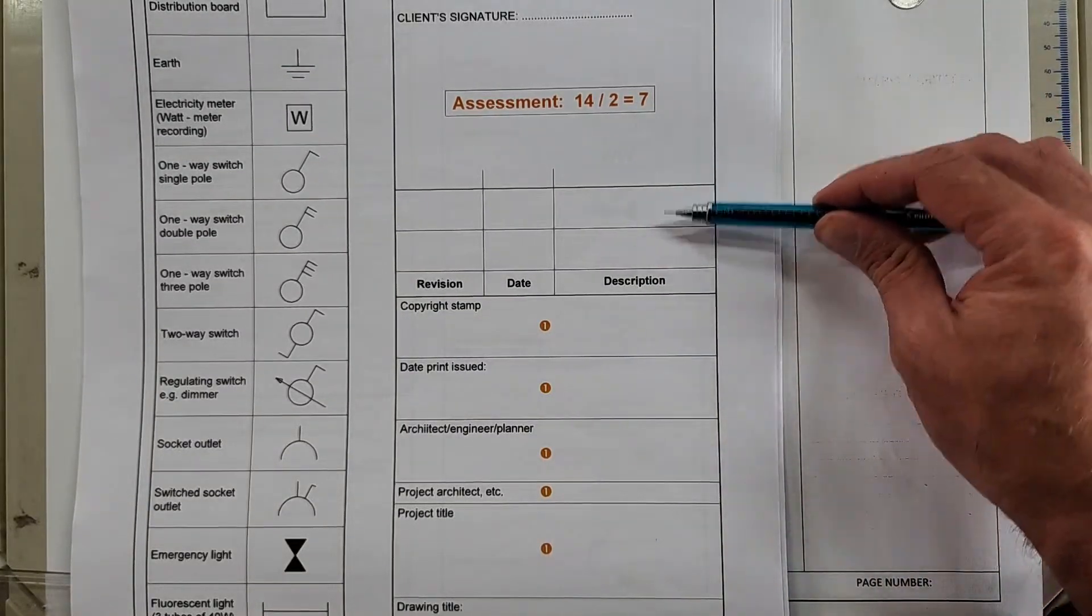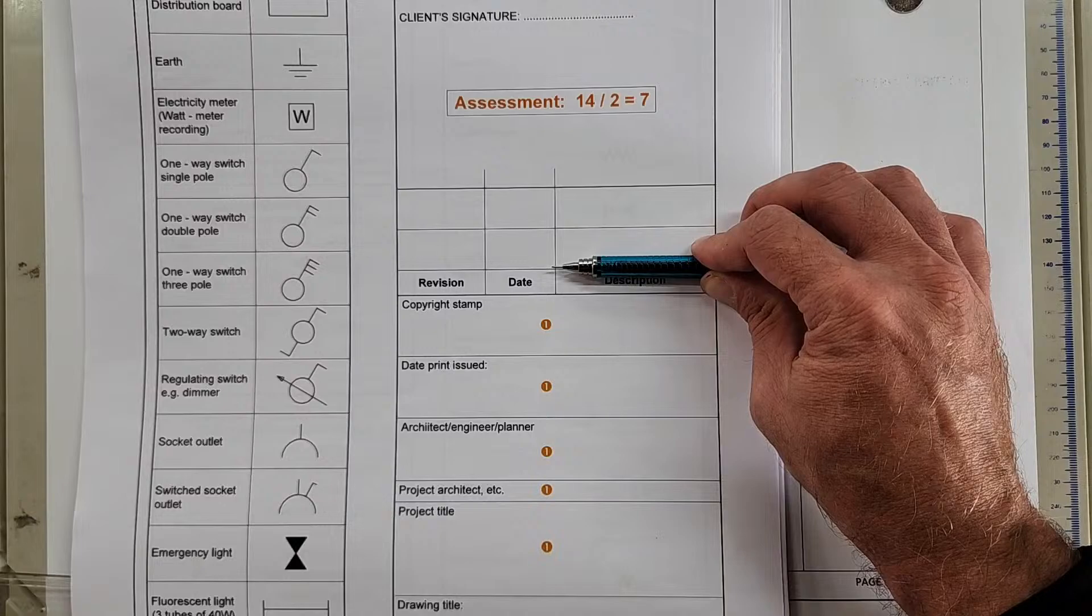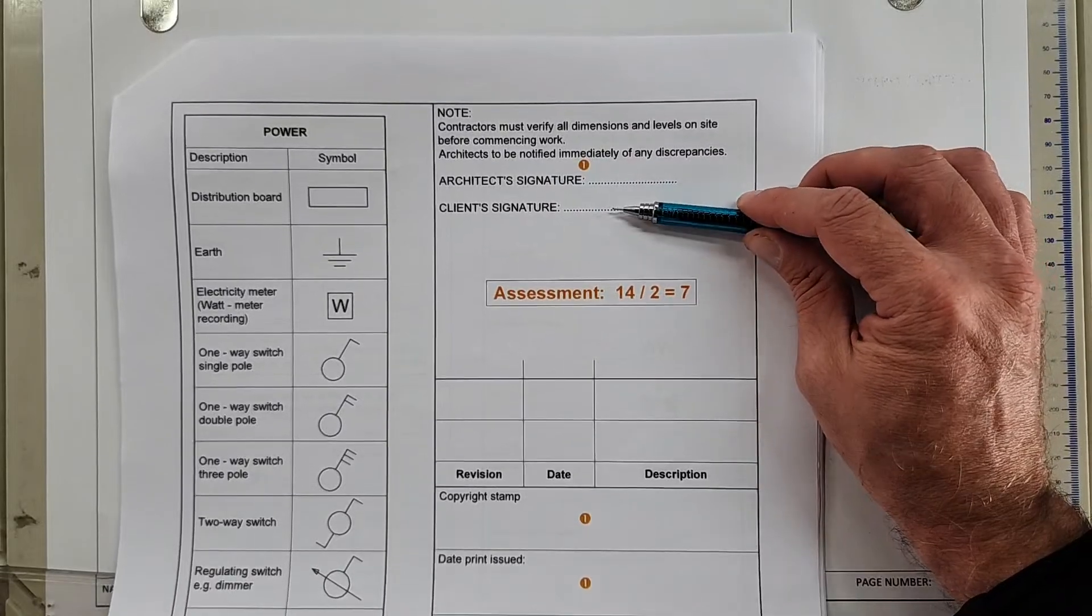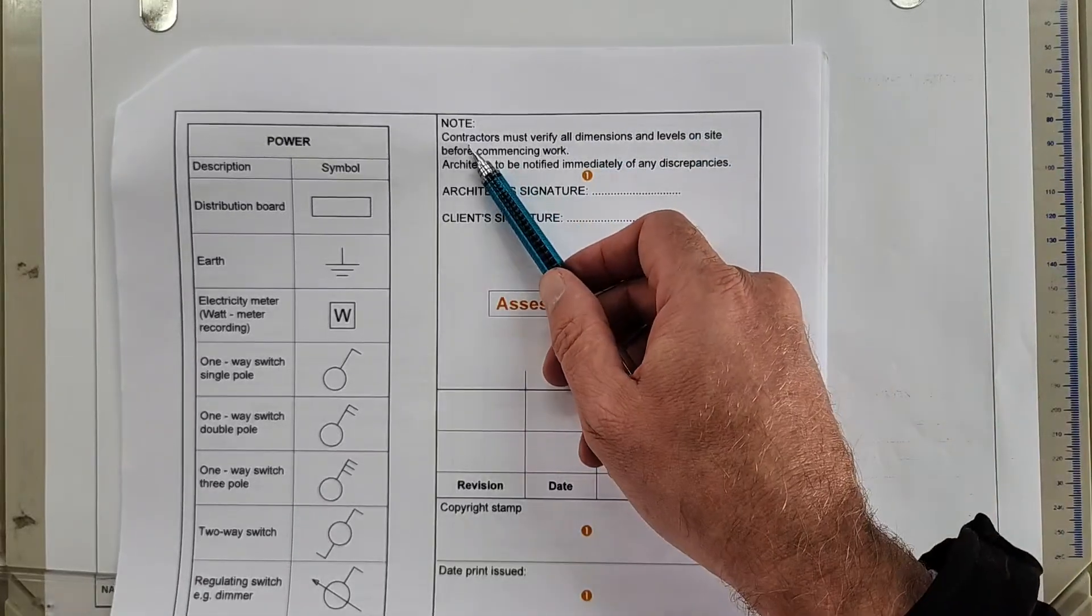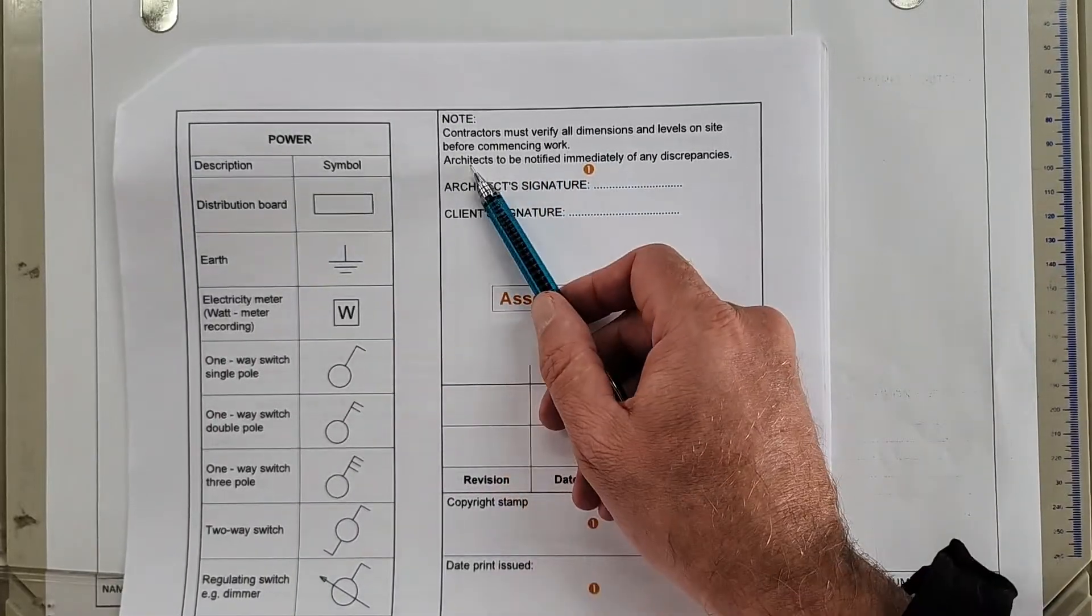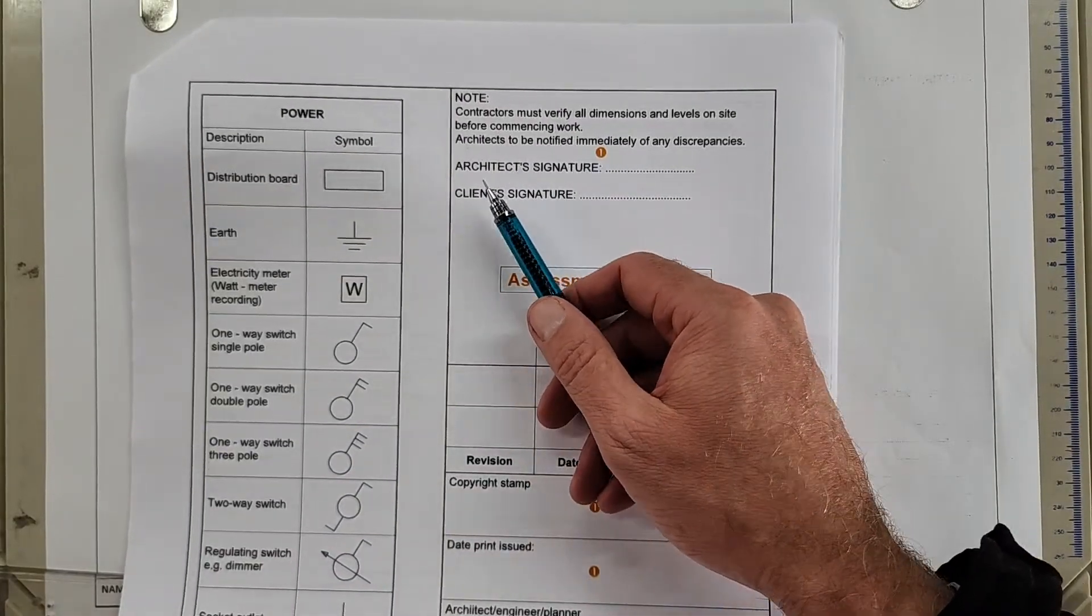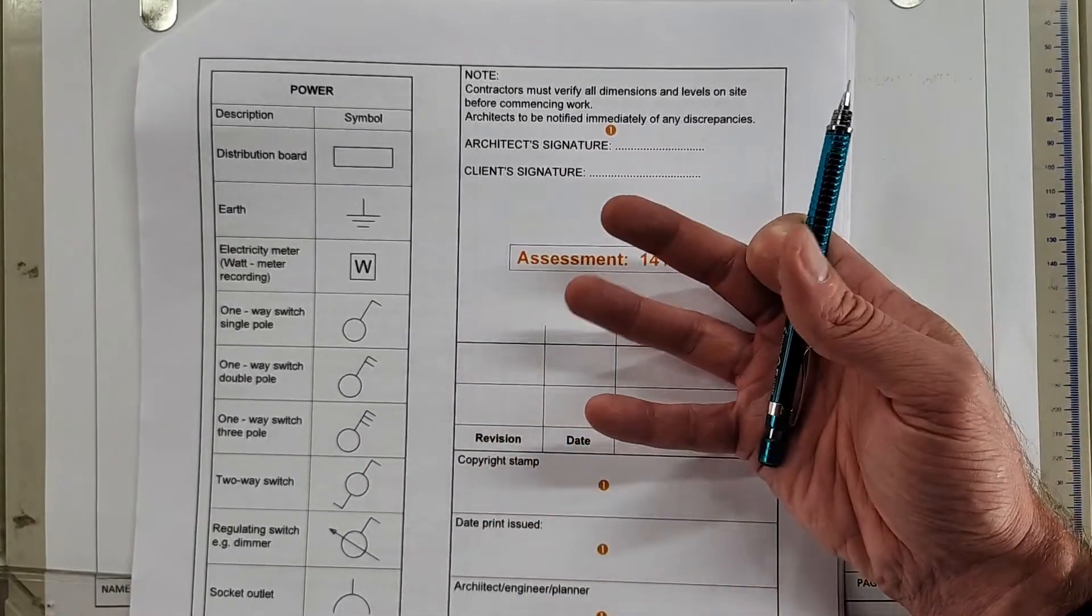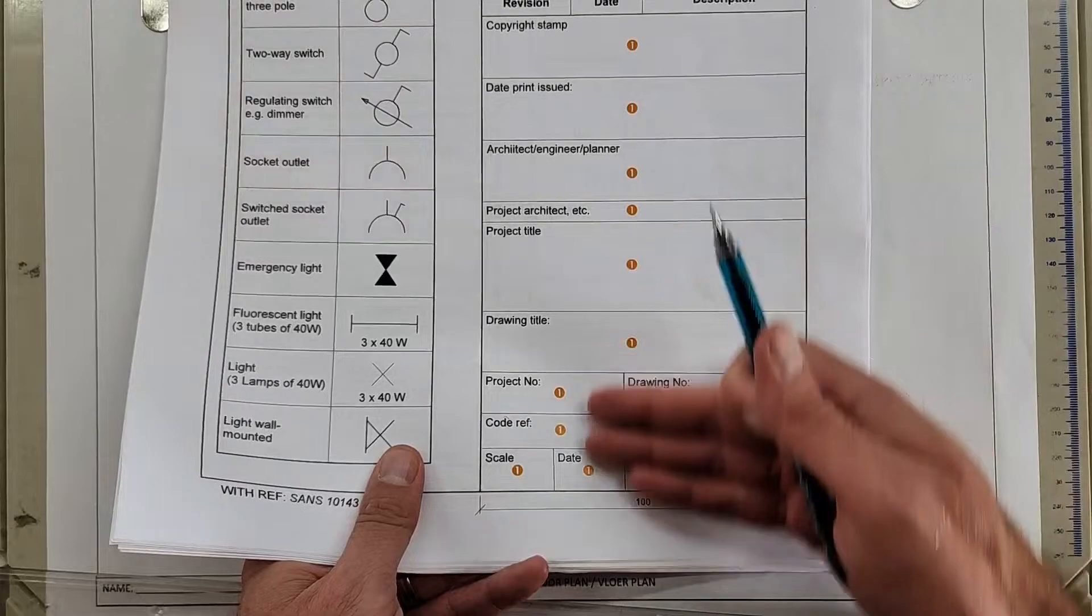We always start from the bottom up because we never know how many revisions there are. If there's going to be three revisions, if I started here and I only had two lines, I was limited with only two revisions that I could make. But because you start from the bottom, there's still space left, and then you end on the top with a place for the client signature and your signature. And then any notes that you might have will be on top of that. A note could be something like 'contractors must verify all dimensions and levels on site before commencing work,' or 'architects to be notified immediately of any discrepancies,' or 'face brick on the outside and plaster walls on the inside'—anything that you want to communicate that's difficult to be done through drawing, you can add to notes.